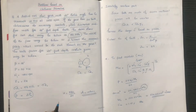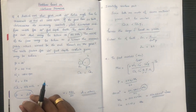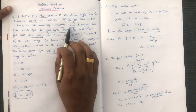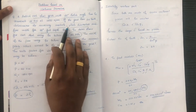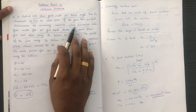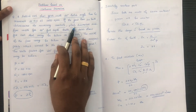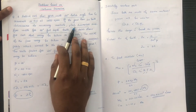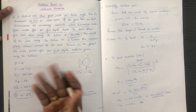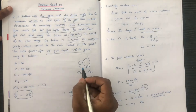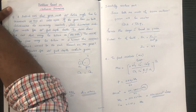The pinion has Z1 = 24 teeth, so we use this to determine the necessary module. Z1 is 24 and from this we can find the gear teeth Z2.